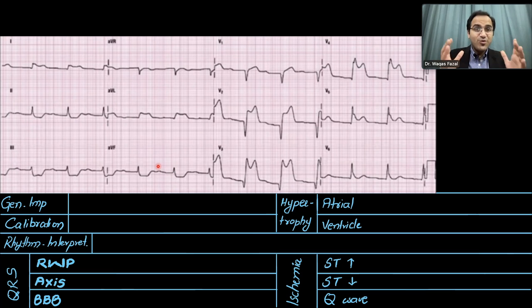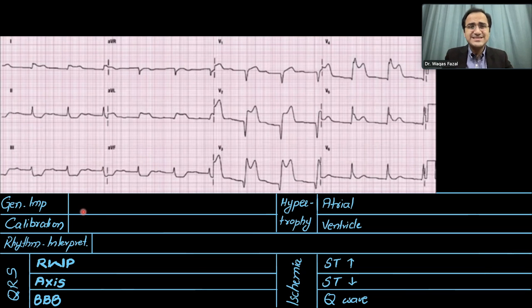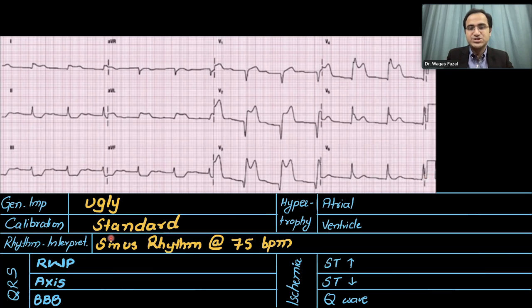If you want to learn the previous six steps, the link to that playlist is in the description. General impression: this is an ugly ECG — there are some abnormal changes. Calibration marker is two large boxes tall and one large box wide — normal standard calibration. For the rhythm, calculating the rate between QRS complexes: we have about three to four large boxes, giving approximately 75 beats per minute.